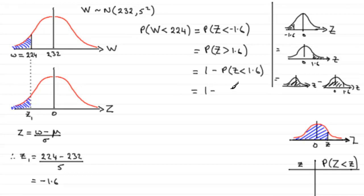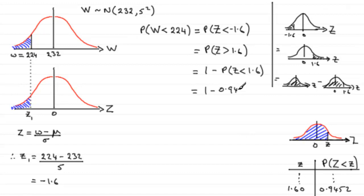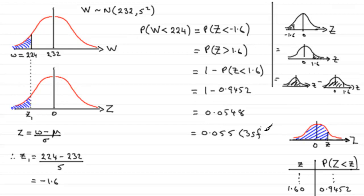Now we look up z = 1.60 in the tables. You'll find it gives 0.9452. So our answer is 1 minus 0.9452, which equals 0.0548. To three significant figures, that is 0.055.